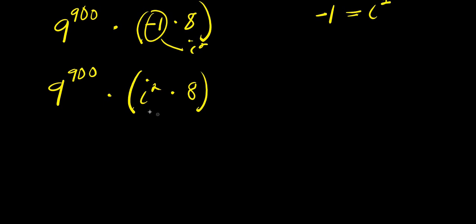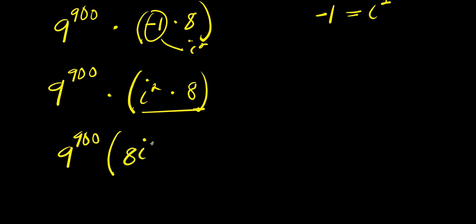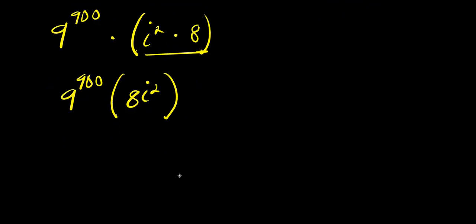Multiplying out inside the bracket, I have 9 to the power of 900 times 8 times i squared. I can also rewrite this as 9 to the power of 900 times 8i squared.